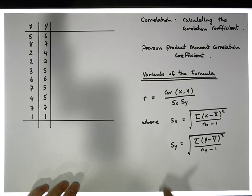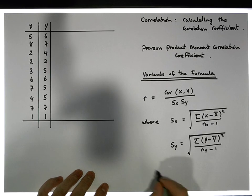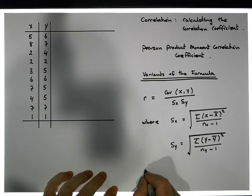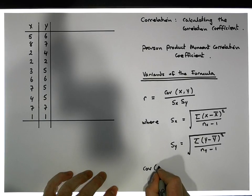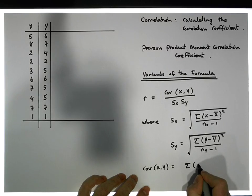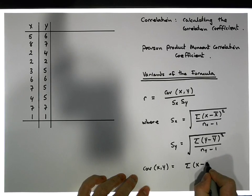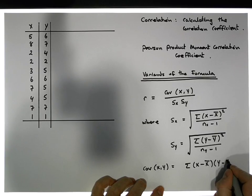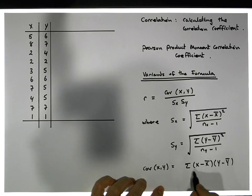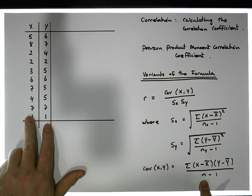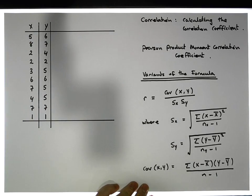The covariance, by definition, is the cross product of differences. So the covariance cov(x, y) is equal to the sum of the differences between the x observations and their respective mean, times the differences between the y observations and their respective mean — divided by n minus 1, which is the sample size minus 1. This is how many paired observations there are. That is our definition of covariance.